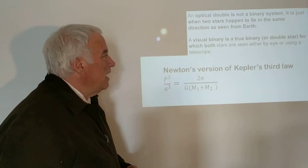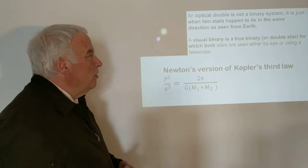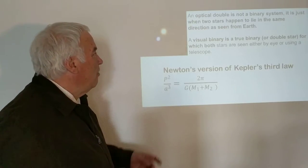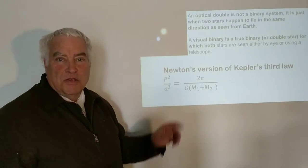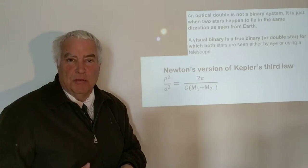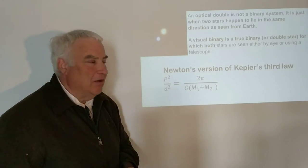A visual binary is a true binary where you could see both of the stars, either by eye or using a telescope. Just from one photograph we cannot tell if this is an optical double or a true visual binary.